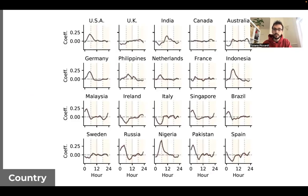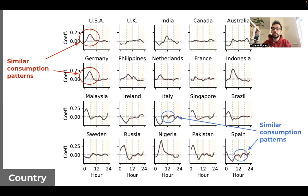Finally, investigating the country coefficients, we can notice similar consumption patterns, such as a preference for morning reading, or a visible pattern that highlights a country where readers prefer to take a break from online consumption to have lunch.